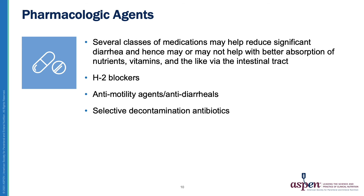One of the things that is very important in the prevention of nutrient deficiency in this group are pharmacological agents. There are several classes of medication that may help reduce significant diarrhea and hence may help with better absorption of nutrients, vitamins, and the like via the intestinal tract. The first group is H2 blockers, such as omeprazole or famotidine. The other group would be anti-motility agents or anti-diarrheals, which would include loperamide. And the third group is selective decontamination antibiotics, the most popular being Flagyl or neomycin.